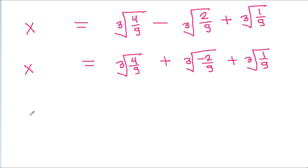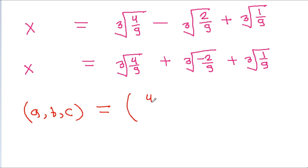So a, b, and c are equal to 4/9, -2/9, and 1/9.